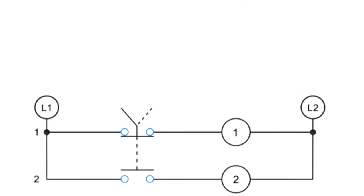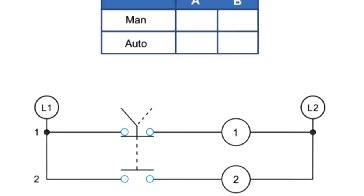Contact position on a selector switch can easily be illustrated using truth tables. This truth table illustrates the manual or automatic contact positions of a two-contact selector switch. Each contact on the line diagram is marked A or B. The positions of the selector switch are marked MAN for manual or AUTO for automatic.